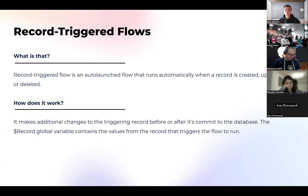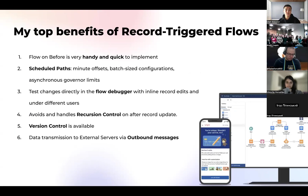For more complex logic — like creating related records or sending emails after a record is created — you use the after-save context, so you're sure the record exists before taking further actions. You have a global record variable containing all fields from the triggering record, whether it's a before, after, create, or update context, and you can work with all of those fields.